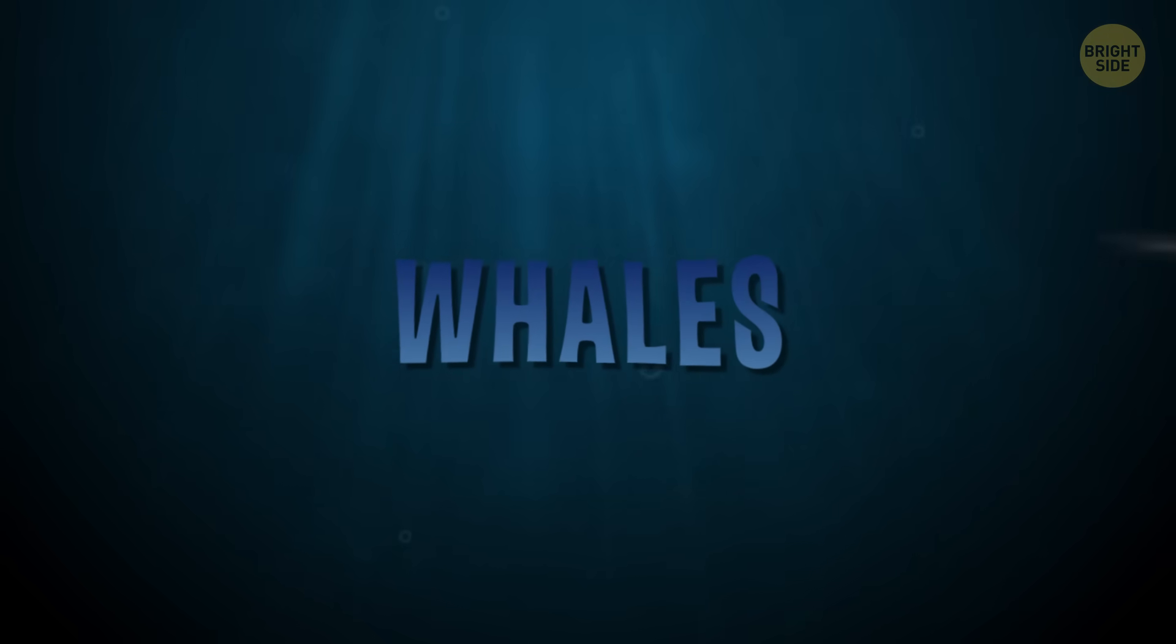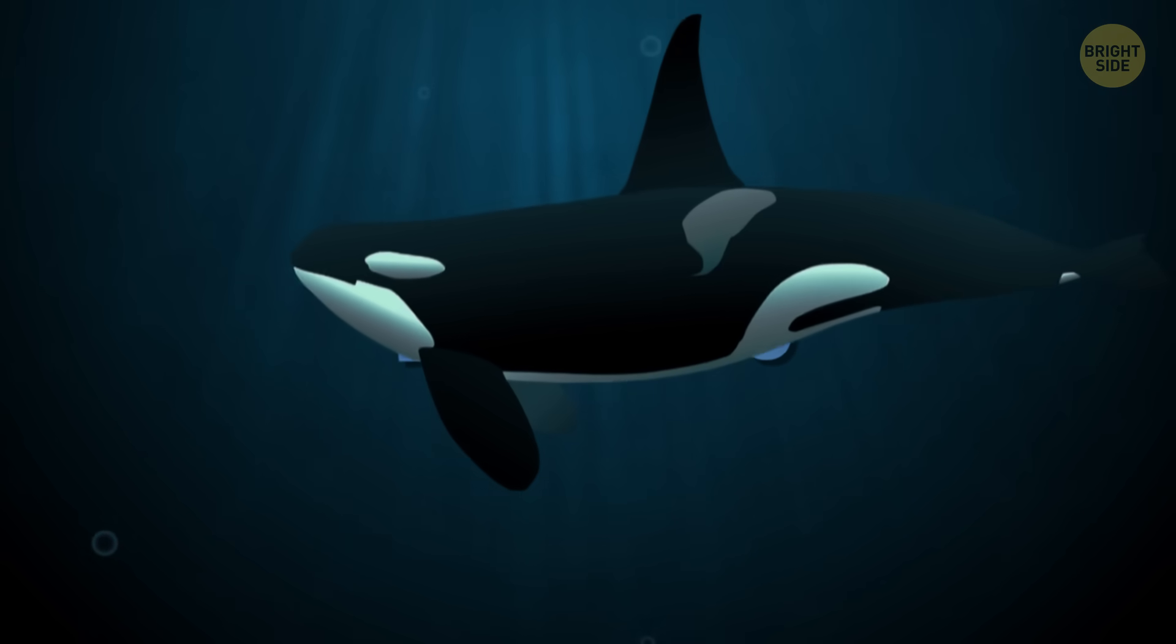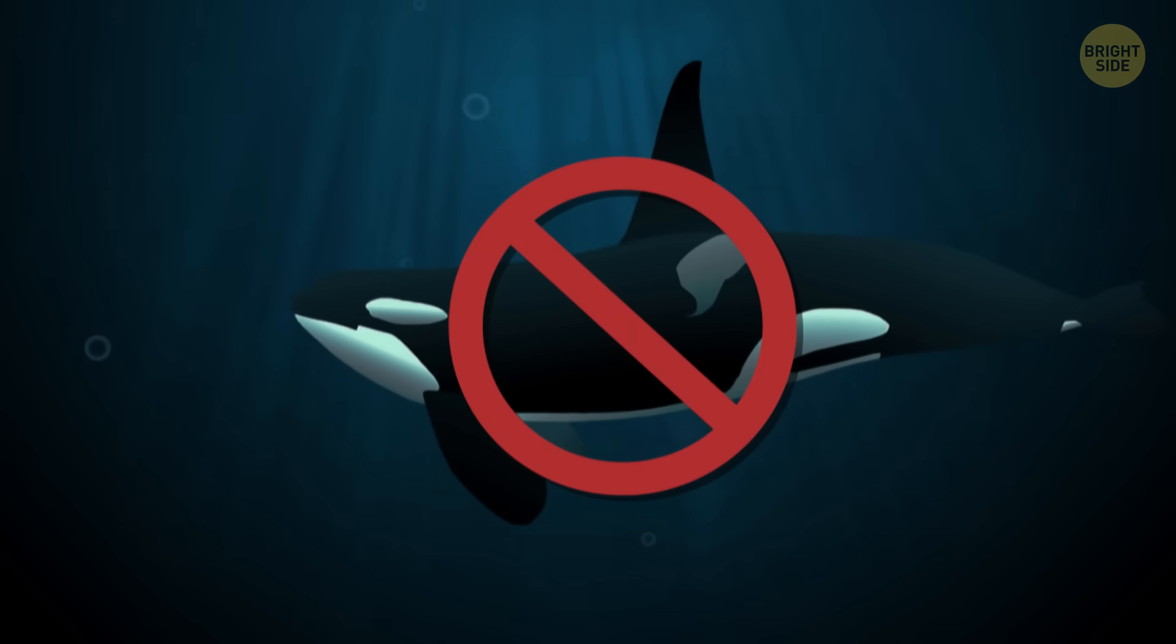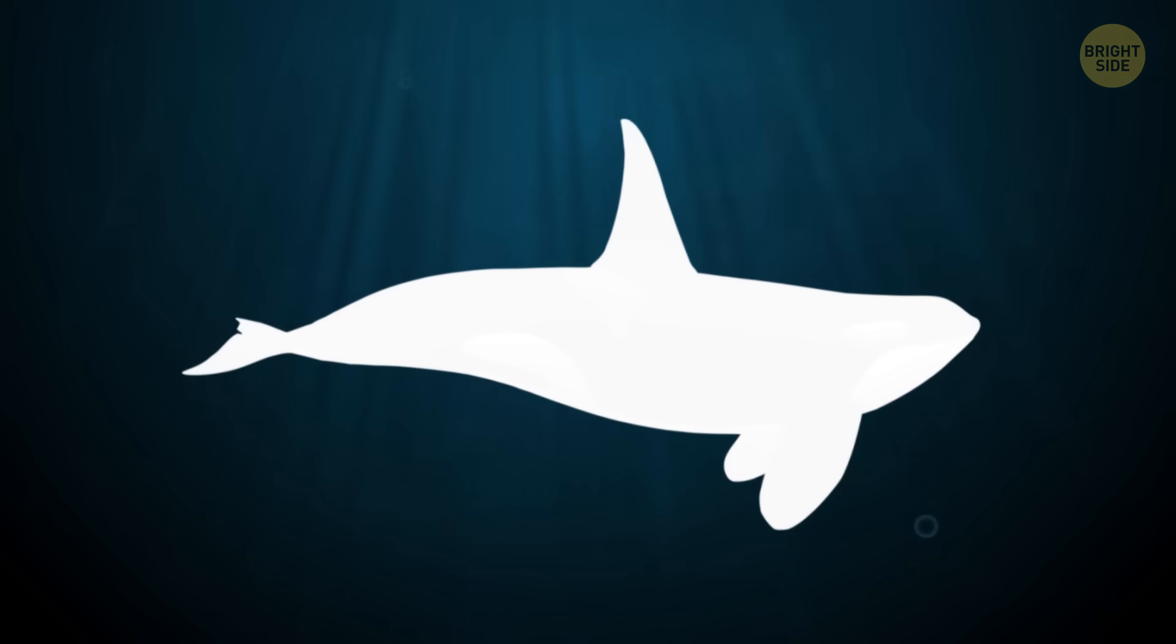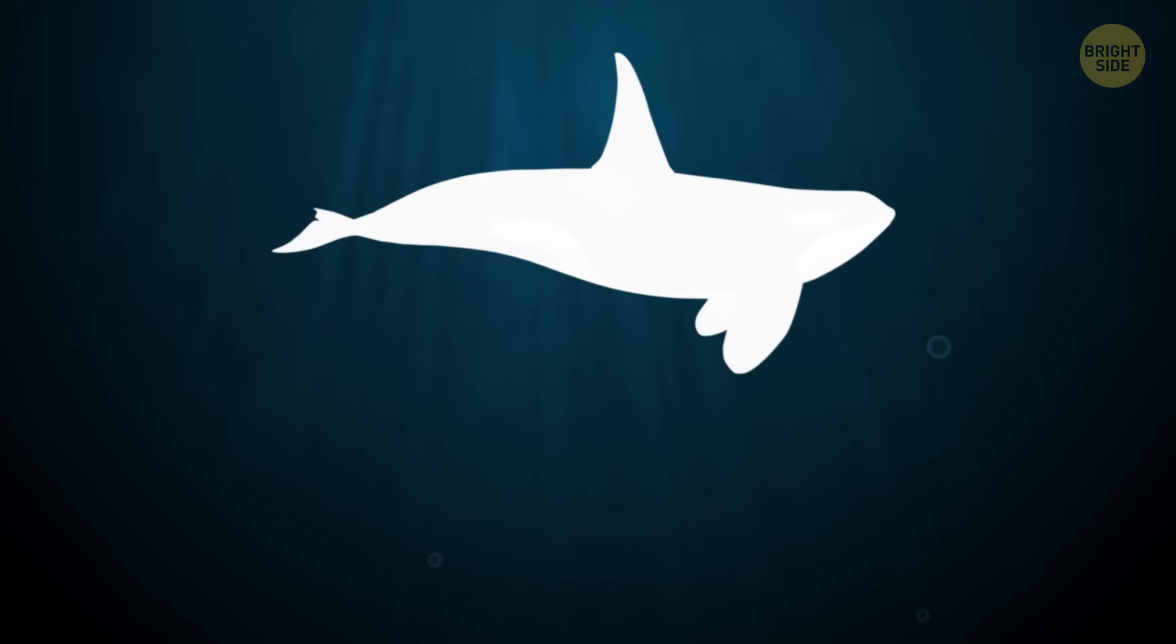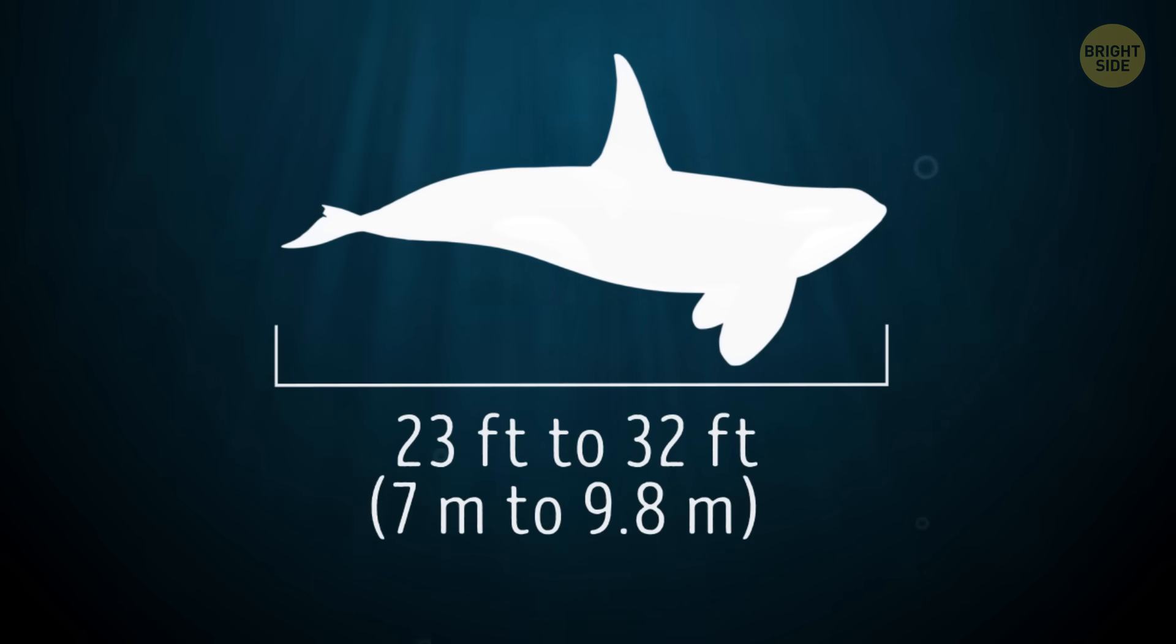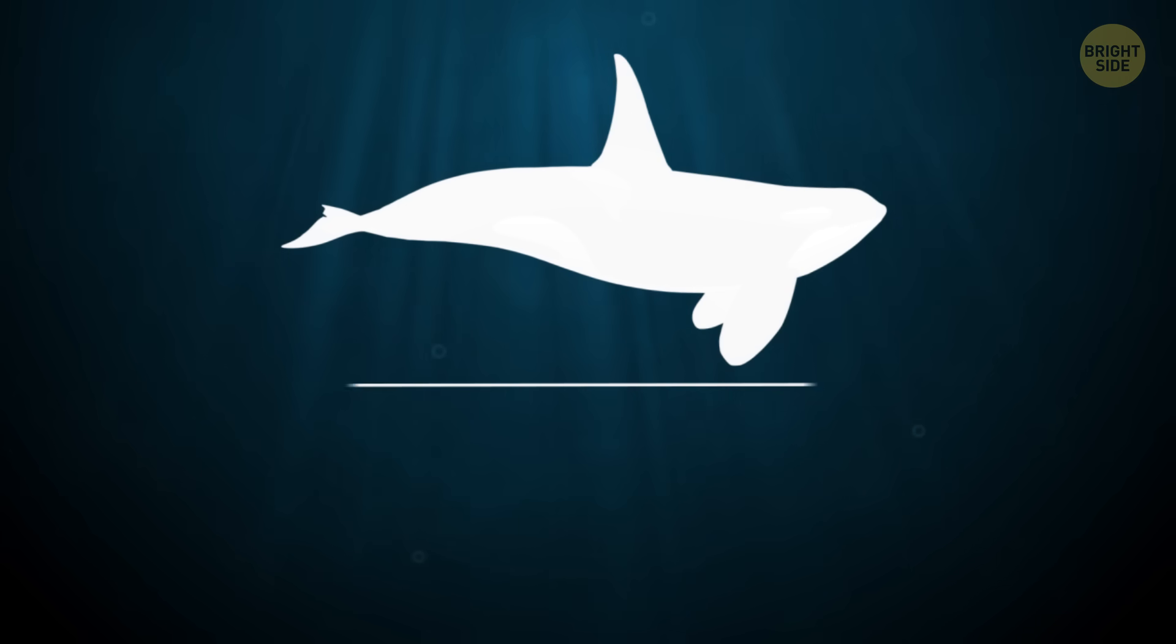Whales. Can you guess which living species of whale is the largest? Well, it's not the orca, but that's a good guess. The orca, also known as the killer whale, is a toothed whale and can grow to anywhere from 23 to 32 feet, which is slightly smaller than a school bus.